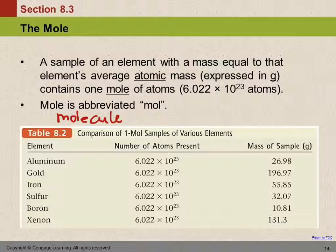Because in a grain of sand — a little tiny grain of sand — there are an incredible number of molecules. If each of those molecules was as big as the grain of sand, it would be bigger than Mount Everest. The particles are so incredibly tiny. This number, 6 times 10 to the 23rd — we just can't even grasp how large that is.